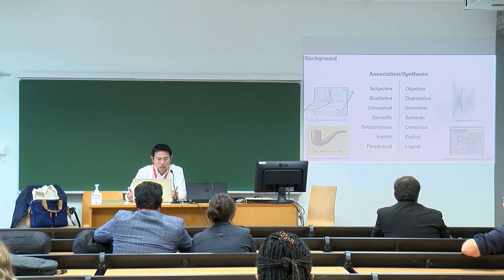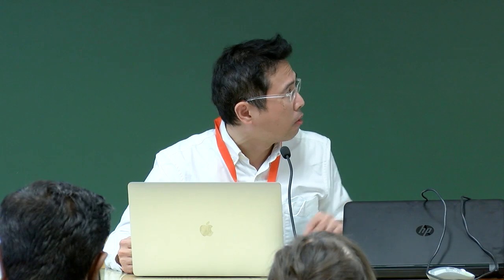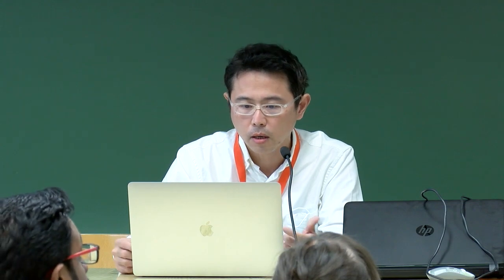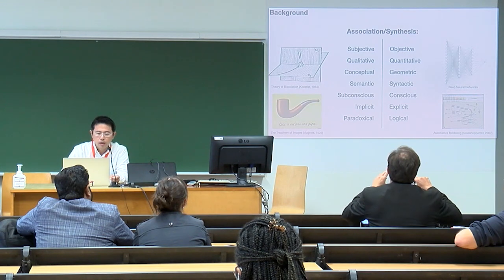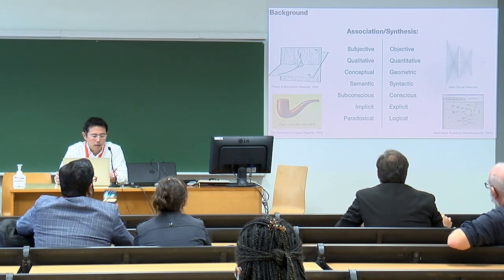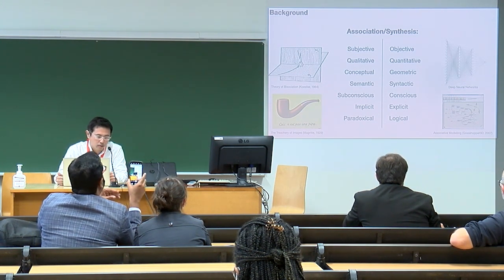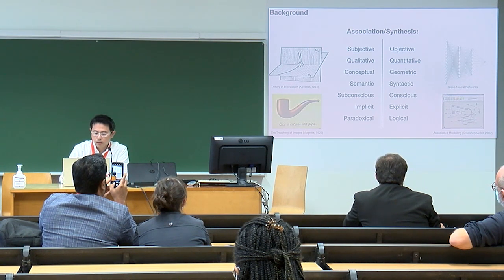On the left you have the subjective versus the objective, the qualitative versus the quantitative. The bisociation, which is something Koestler talked about — where different frames of reference intersect — there is the associative context versus the geometric, the semantic versus the synthetic, the subconscious versus the conscious, the implicit versus the explicit, and even the paradoxical, at least in the case of the painting of the pipe — the treachery of images — and the logical.